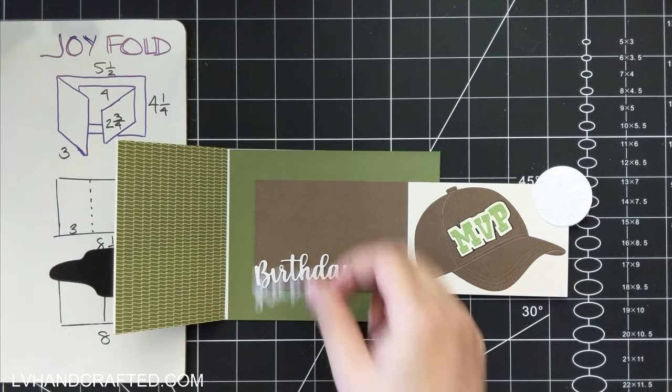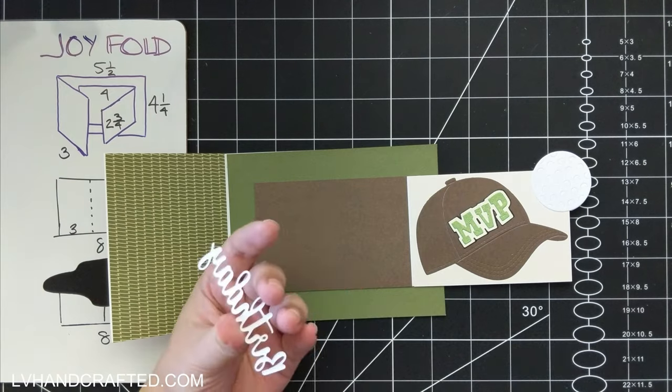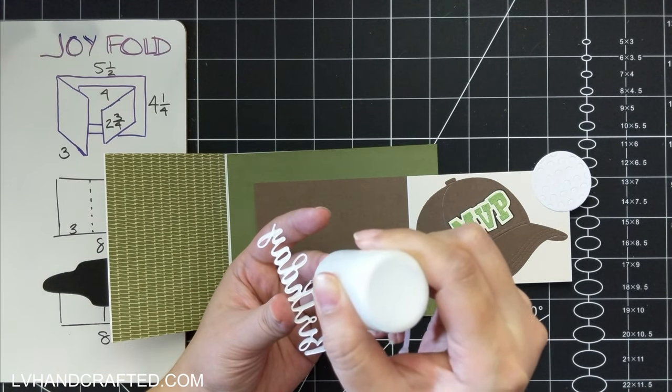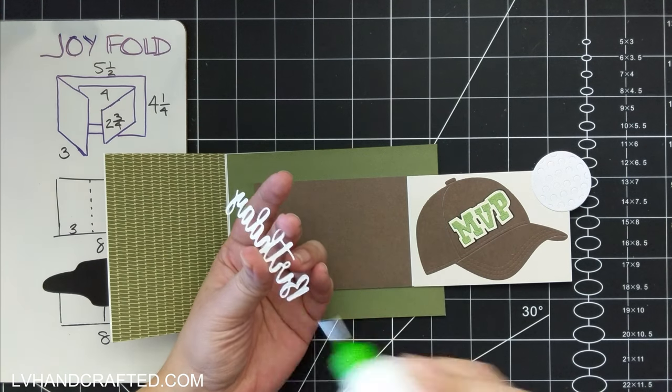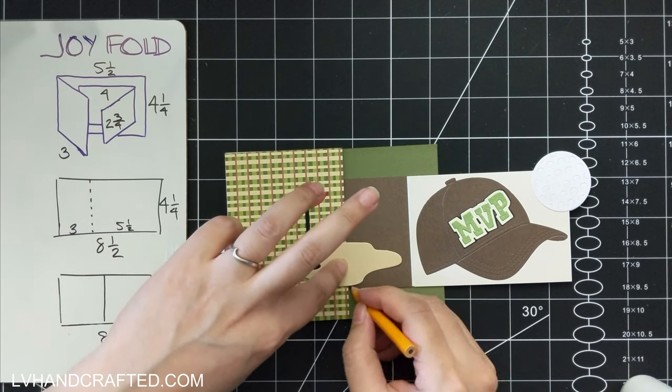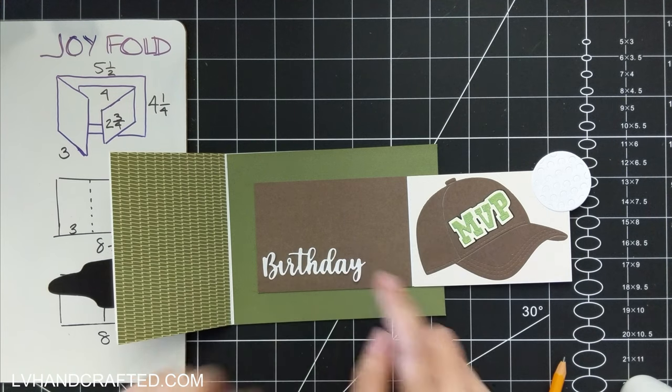And so the last bit on the main panel here is where I want to put my sentiment, which is a Cottage Cuts sentiment die. This one does come with a shadow, but I already have enough contrast between the dark brown of this panel and the white cardstock that I've cut.